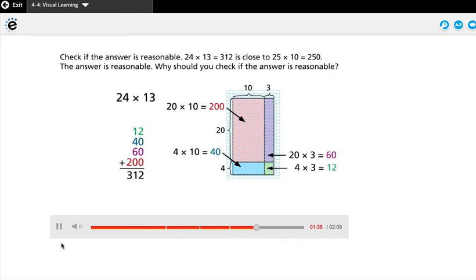Check if the answer is reasonable. 24 times 13 equals 312 is close to 25 times 10 equals 250. The answer is reasonable.